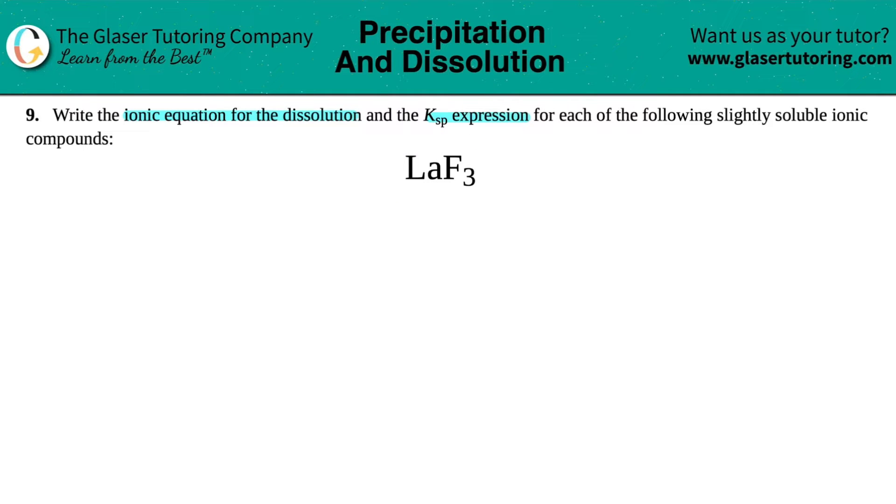So in this case, we first have to write an ionic equation to get to the KSP expression. Now, keep in mind that they did tell us that these are slightly soluble compounds. Slightly soluble means that at equilibrium, only a little bit of this compound is going to break down into its ions. But if a little bit breaks down, we still have to write the equation. But that means that generally the starting compound is a solid.